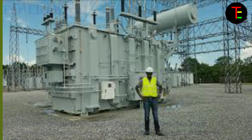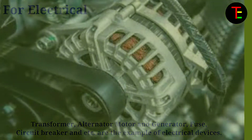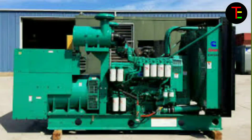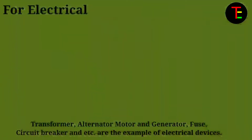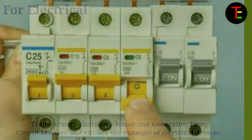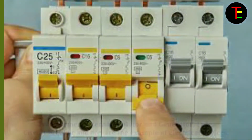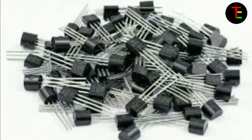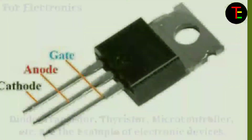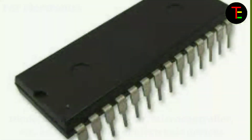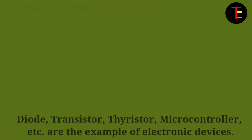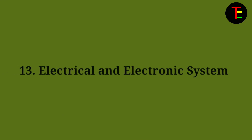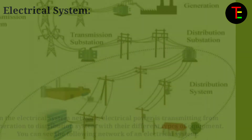No.12 Examples: For electrical — transformer, alternator, motor and generator, fuse, circuit breaker, etc. are examples of electrical devices. For electronics — diode, transistor, thyristor, microcontroller, etc. are examples of electronic devices.